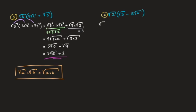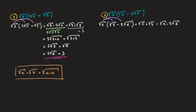Now let's look at the second example. We need to expand and simplify the square root of 2 multiplying the square root of 3 minus 5 times the square root of 6. I distribute the square root of 2 the usual way, so that becomes the square root of 2 times the square root of 3, minus the square root of 2 times 5 times the square root of 6.